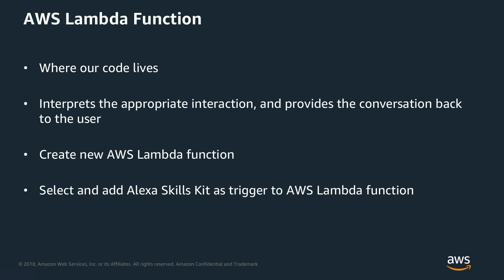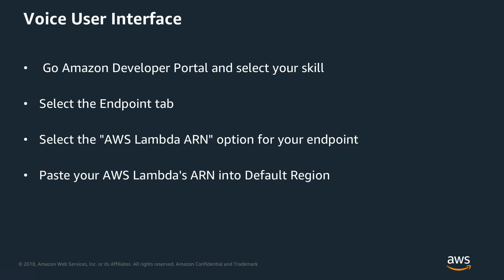The AWS Lambda function is where we put our code. This is where we interpret the appropriate interactions — what kind of commands I'm sending to the Alexa skill, what's going to be the next command, when I'm going to be asking for help, and other things we need to tell the Alexa skill to handle. Before that, we need to create the AWS Lambda function and then check some data to connect it. One thing we have to configure is the trigger, which is going to be the Alexa Skills Kit.